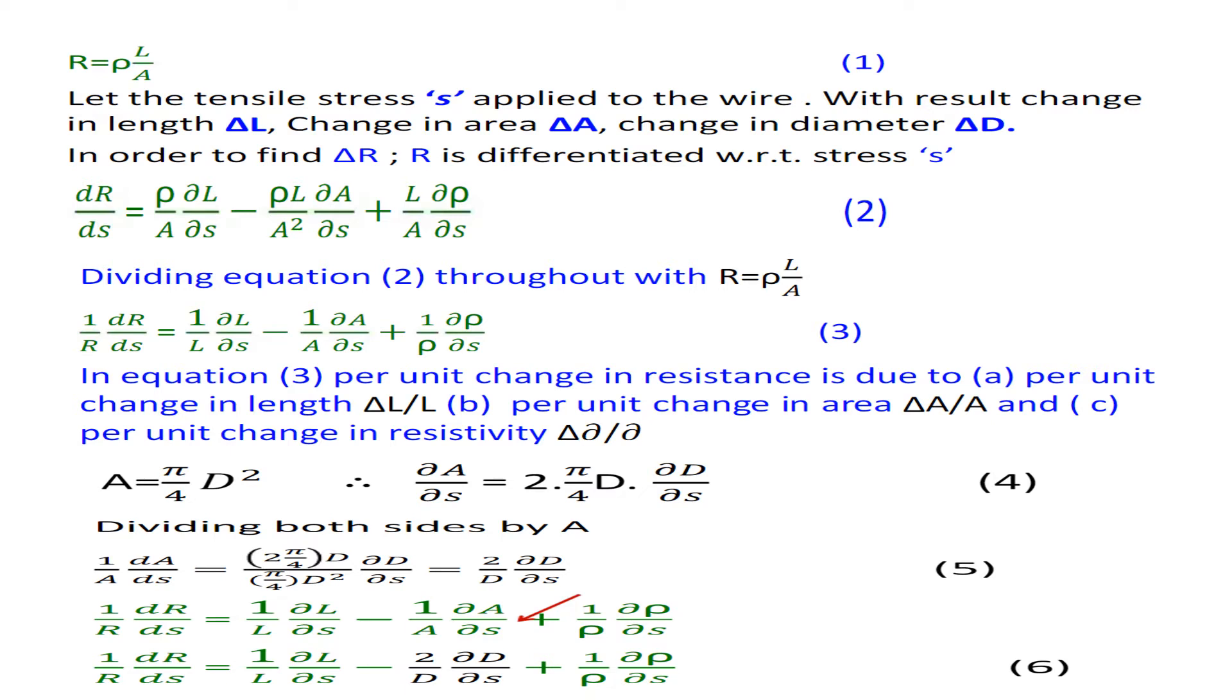Dividing equation 2 throughout with R = ρL/A, we get 1/R dR/dσ = 1/L dL/dσ - 1/A dA/dσ + 1/ρ dρ/dσ.